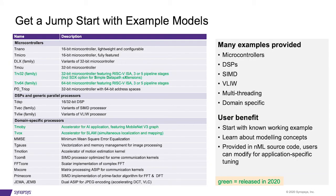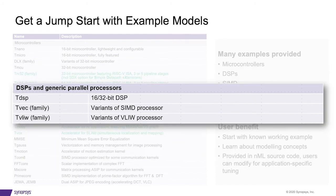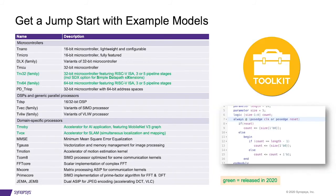Of course, ASIP Designer comes with a wide range of example processors written in NML and provided in source code. These include microcontrollers including various RISC-V ISA models for both 32-bit and 64-bit, but also vector processors in VLIW architectures, as well as highly specialized application-optimized cores. For all of these, you can generate the SDK and the RTL right away — they serve as a modeling reference as well as a starting point for your own design. We'll cover these example models in more detail in a separate video.